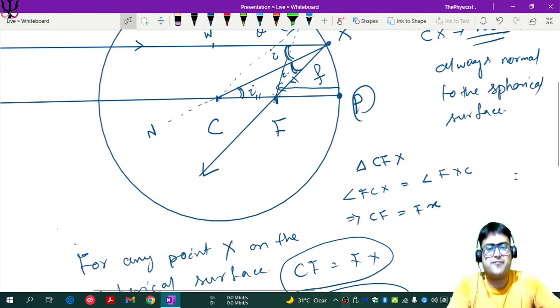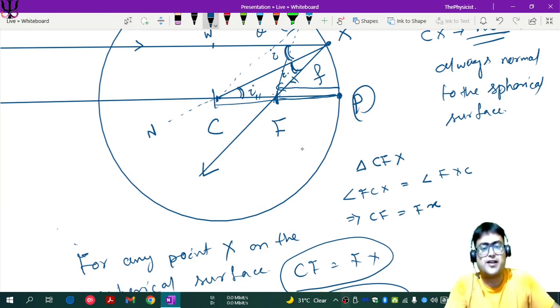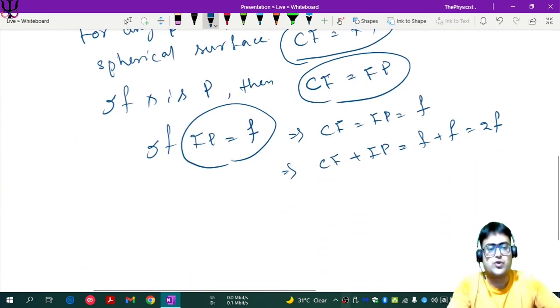But CF plus FP is what? CF plus FP, this entire length is equal to CP, which is what? The radius of curvature. This entire distance is called the radius of curvature by definition. So, CF plus FP is CP, which is the radius of curvature, that is 2F.